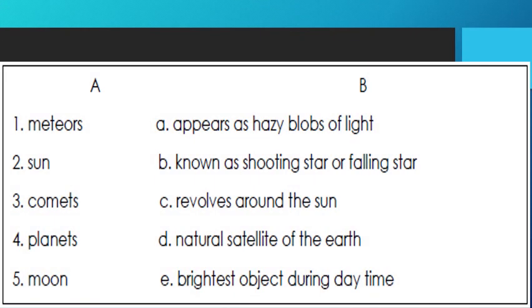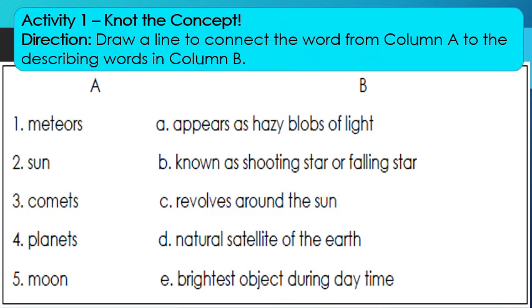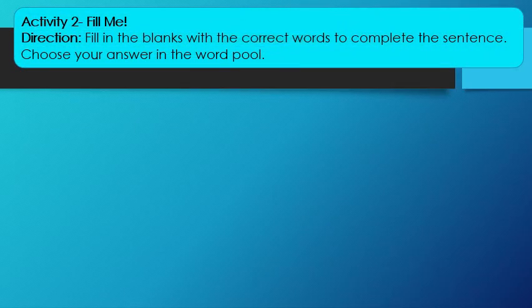Now, let's have some activities. Activity 1: Not the concept. Draw a line to connect the word from column A to the describing words in column B. Column A: Number 1, Meteors. 2, Sun. 3, Comets. 4, Planets. 5, Moon.